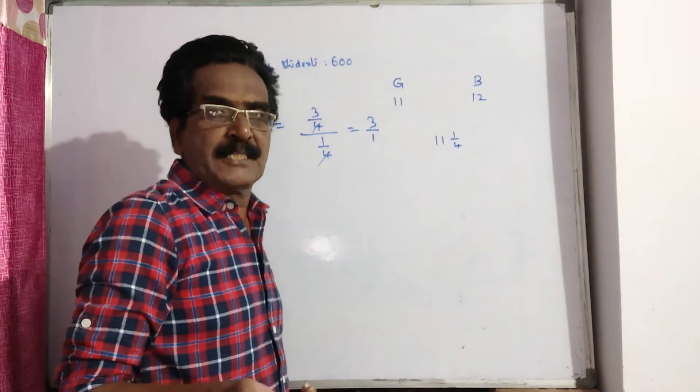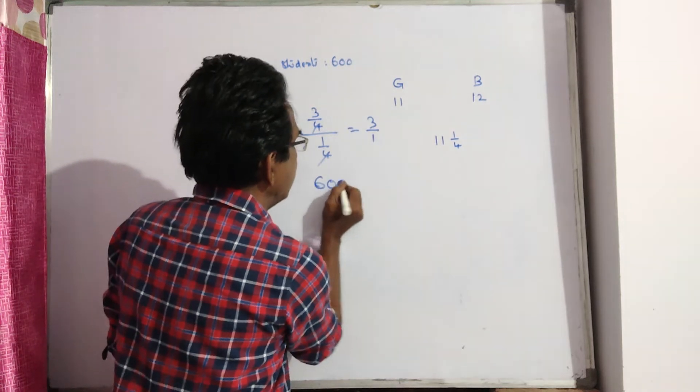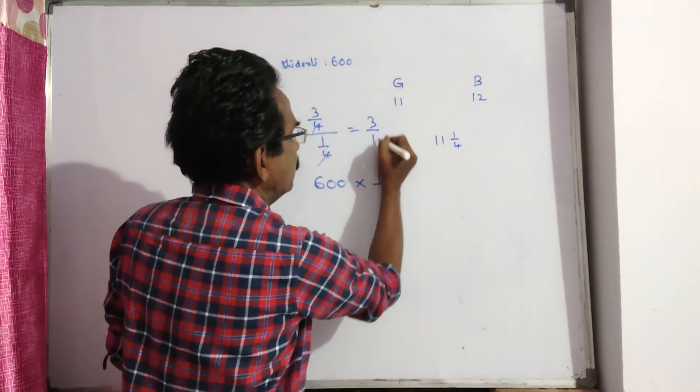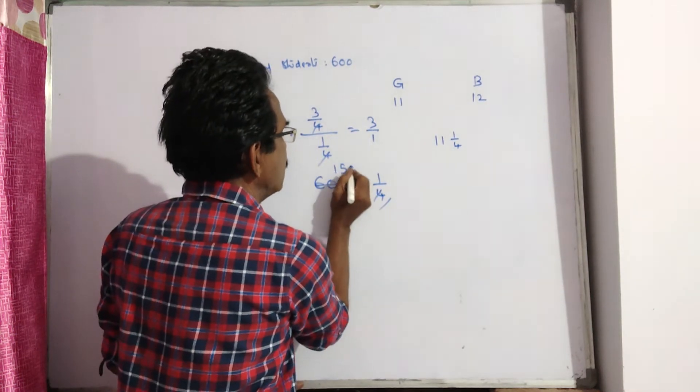Of course, now at the present problem, we want only boys. 600 into 1 by 3 plus 1, 4. 4 150's.